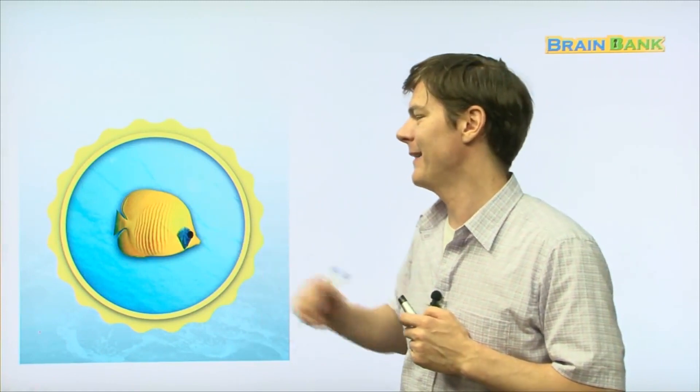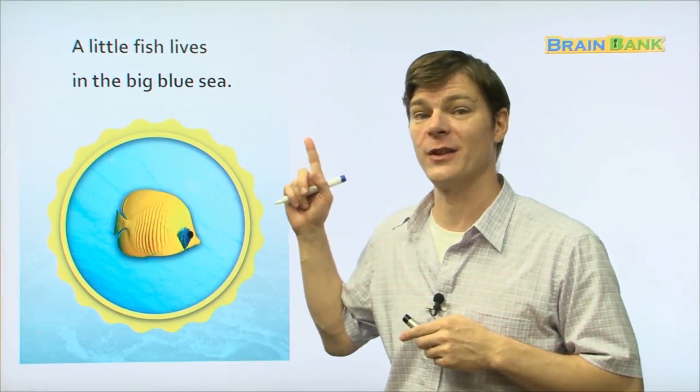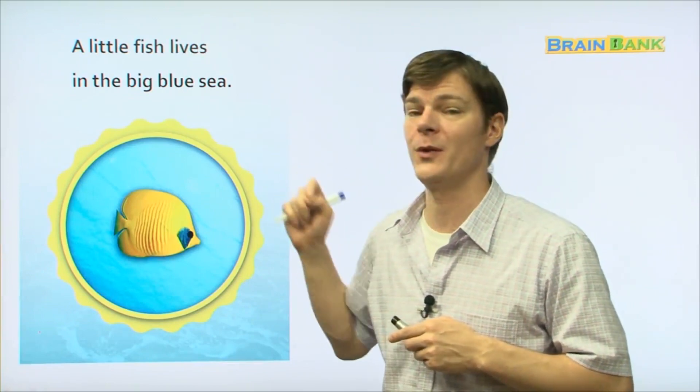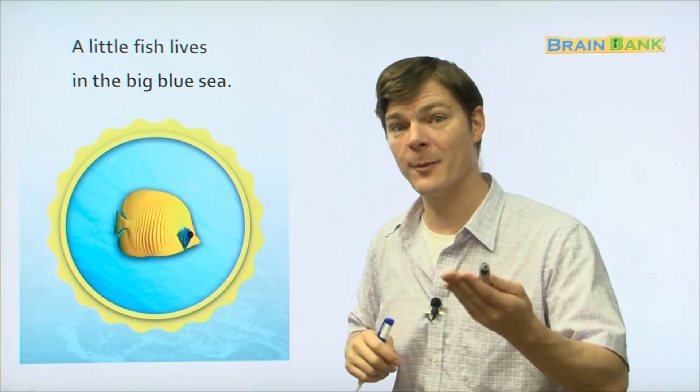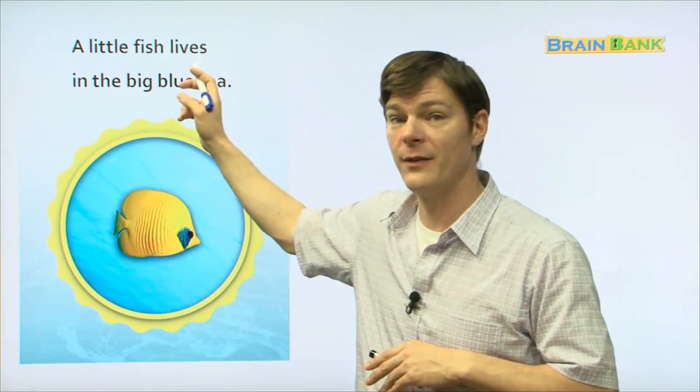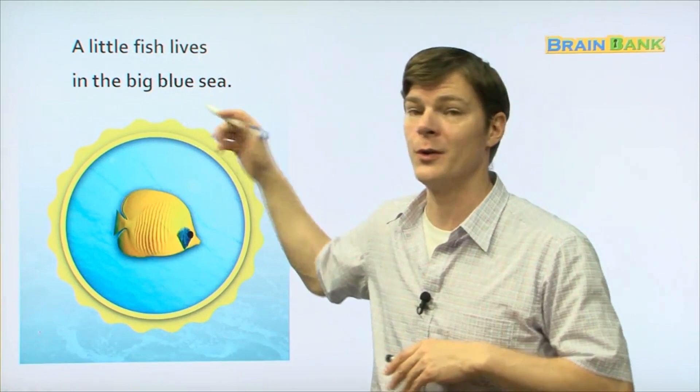Here is one fish. And what color is this fish? Yellow, that's right. And this fish is called a butterfly fish. A little fish lives in the Big Blue Sea. Everyone, repeat after me. A little fish lives in the Big Blue Sea.